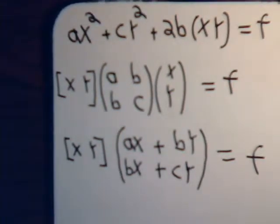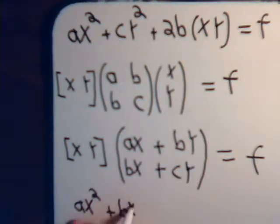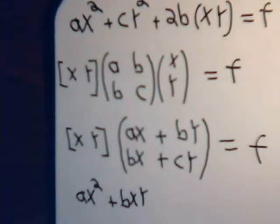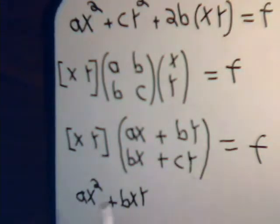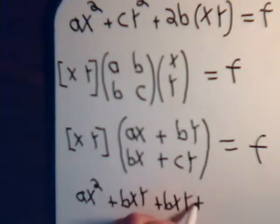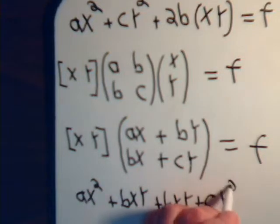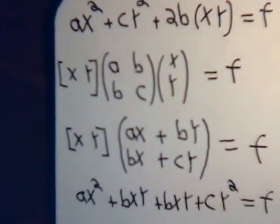Now, remember, when you multiply by a row vector, it's this times the first row plus the second element times the second row. So this will give us Ax squared plus Bxy. Then here, second element in the row gets multiplied by the second row. So this will be Bxy plus Cy squared equals f.